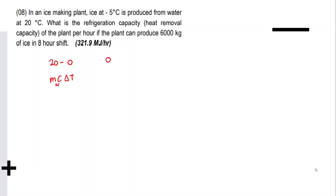Then from 0°C to 0°C it freezes — that's M·L_F. Then from 0°C to −5°C it cools as ice — that's M·c_ice·ΔT. These three steps make up the total refrigeration capacity, divided by the 8-hour shift to get the rate.